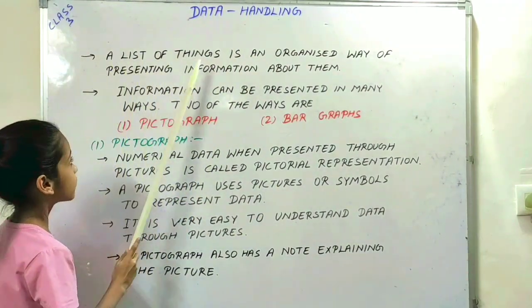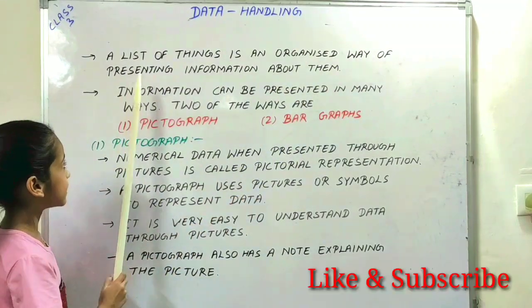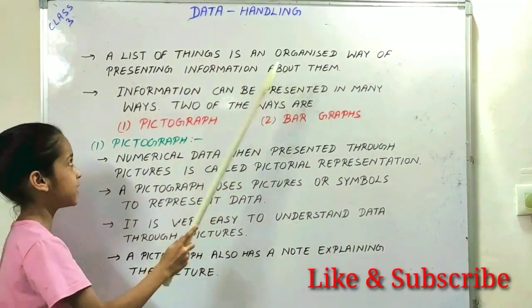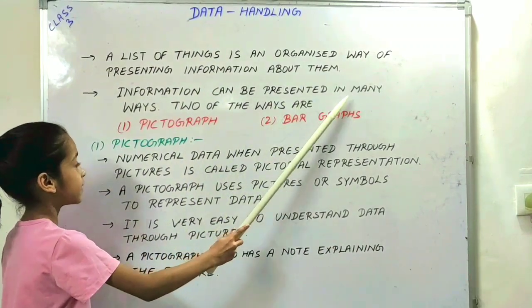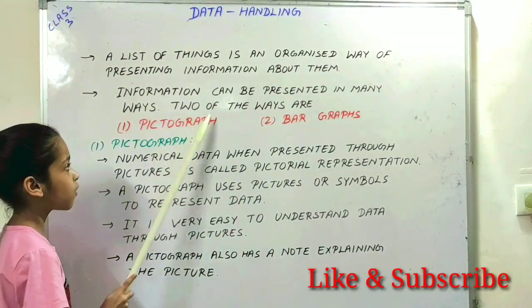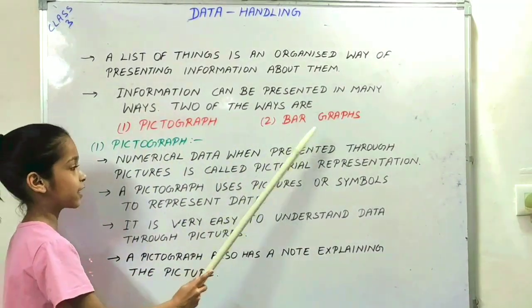A list of things is an organized way of presenting information about them. Information can be presented in many ways. Two of the ways are: first way is pictograph and second, paragraphs.